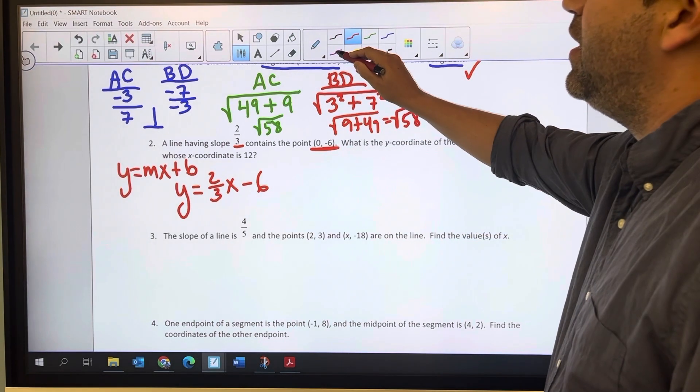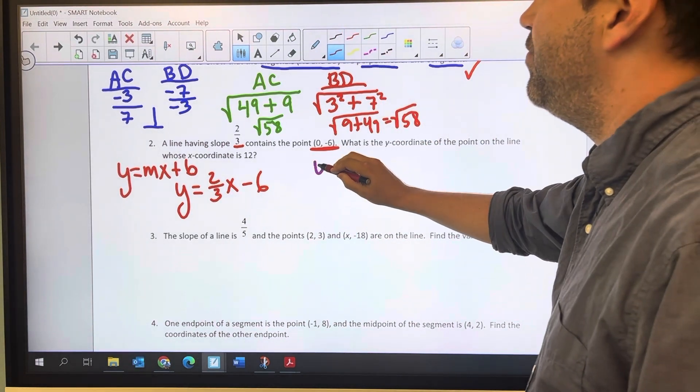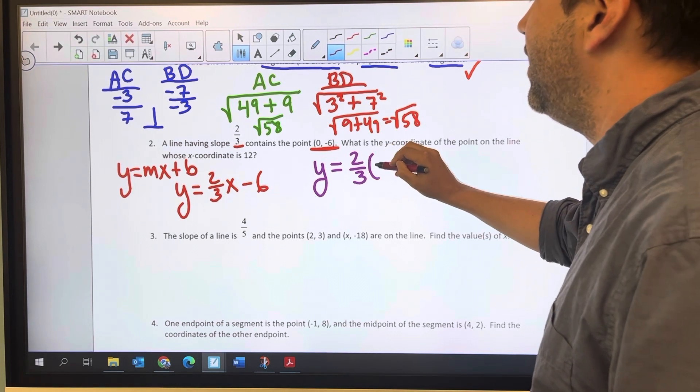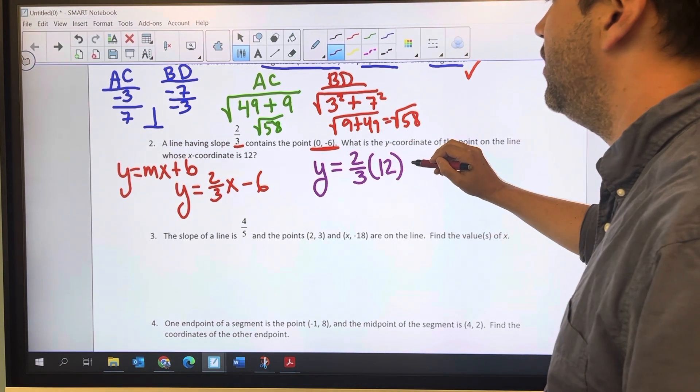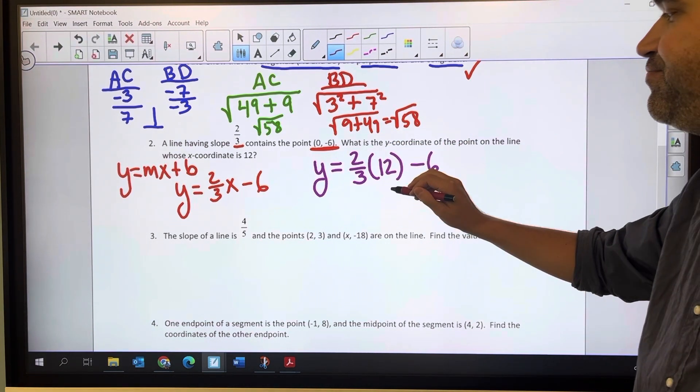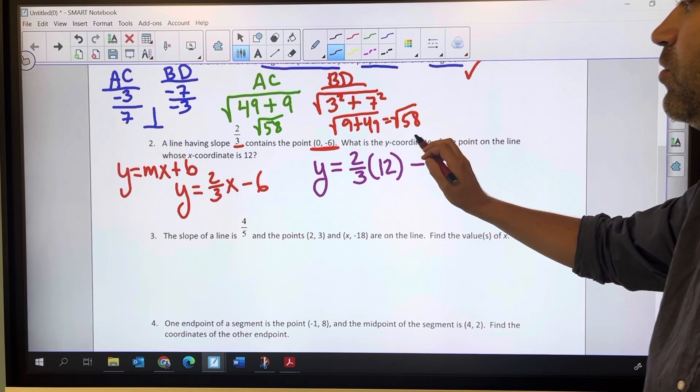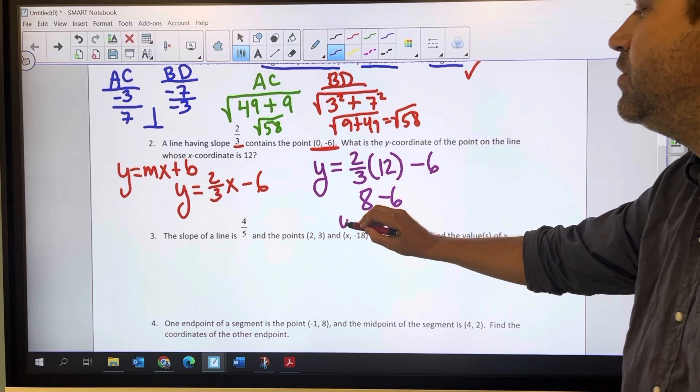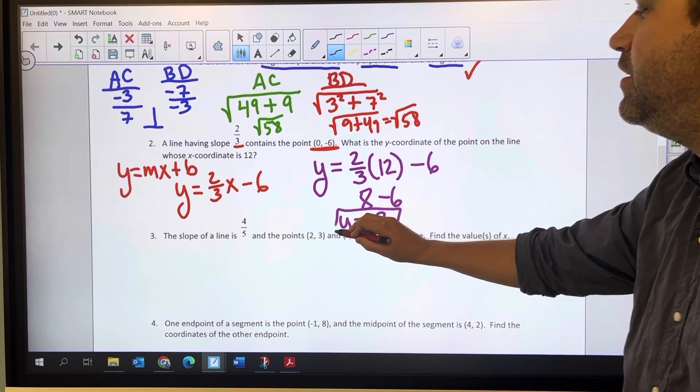What is the y-coordinate of the point on the line whose x-coordinate is 12? So getting the equation of the line is the first step, but now I want to know what is y when x is 12. 2 thirds times 12, 8. 8 minus 6, 2. So that y-coordinate is 2.